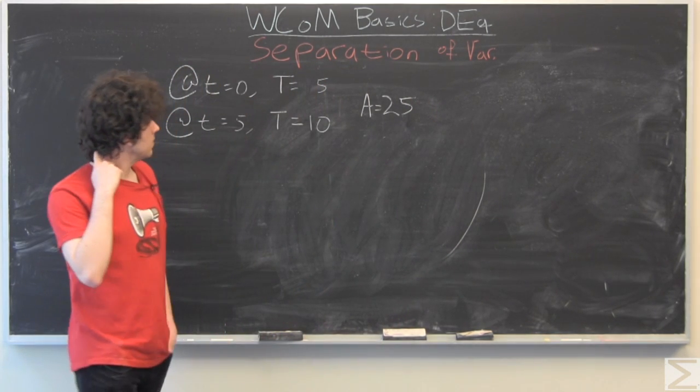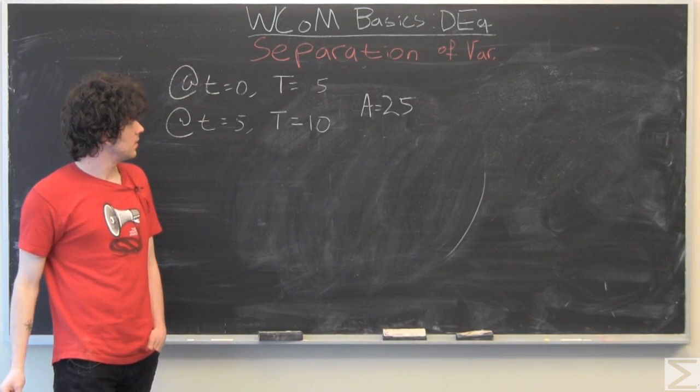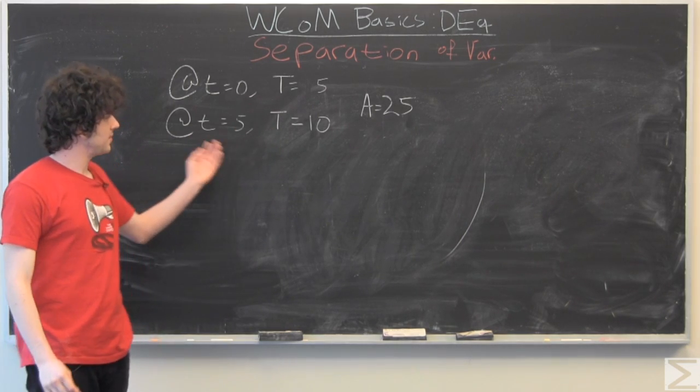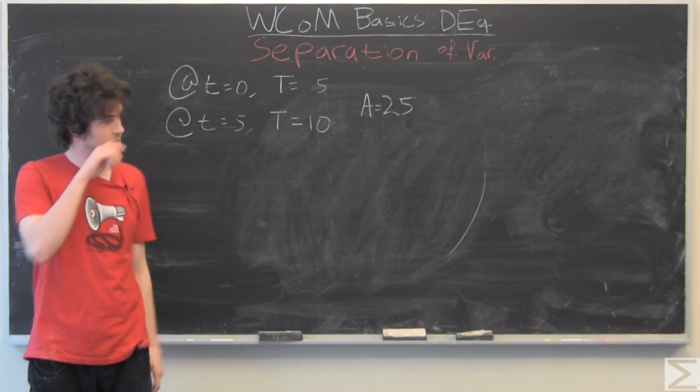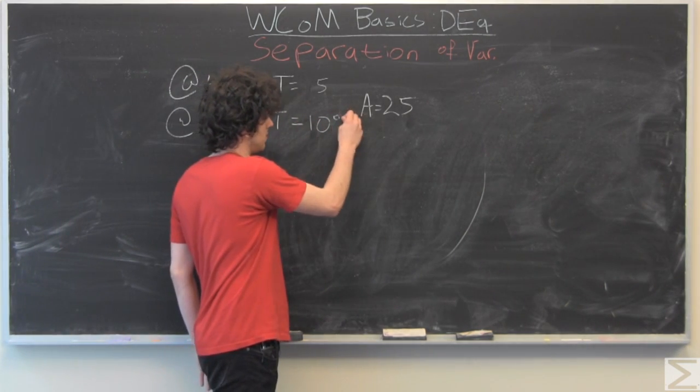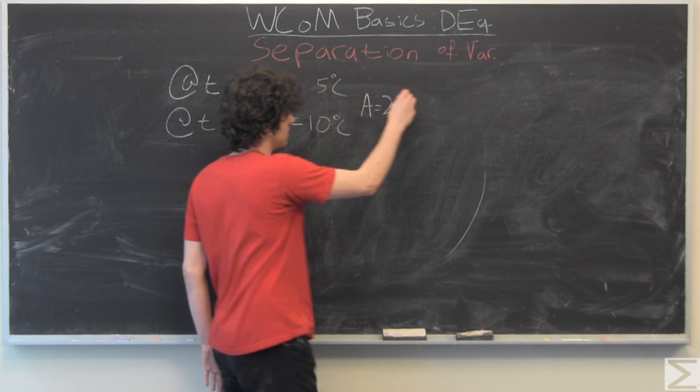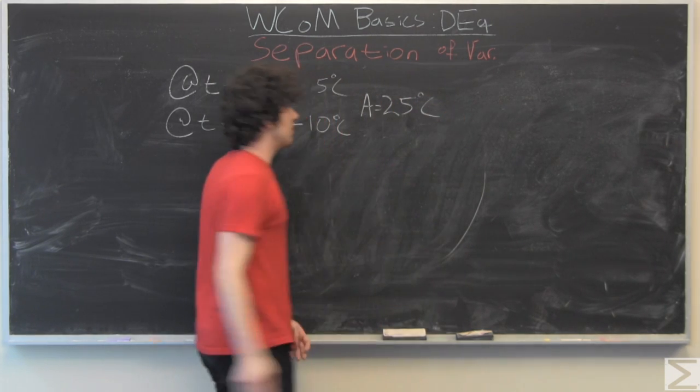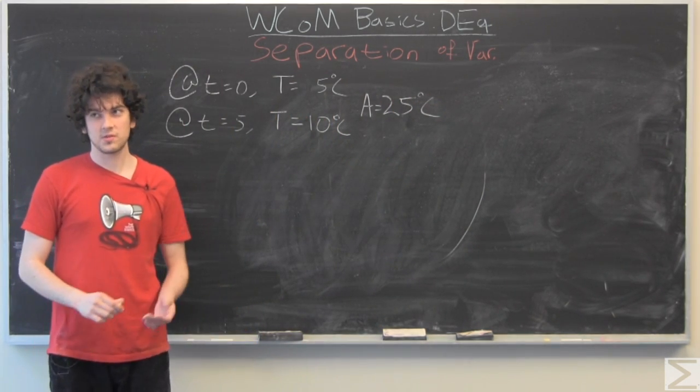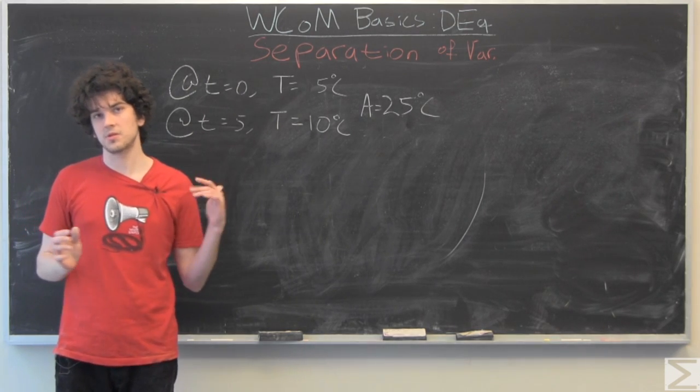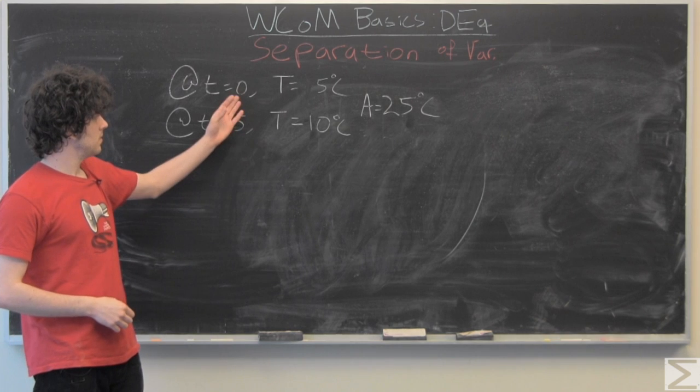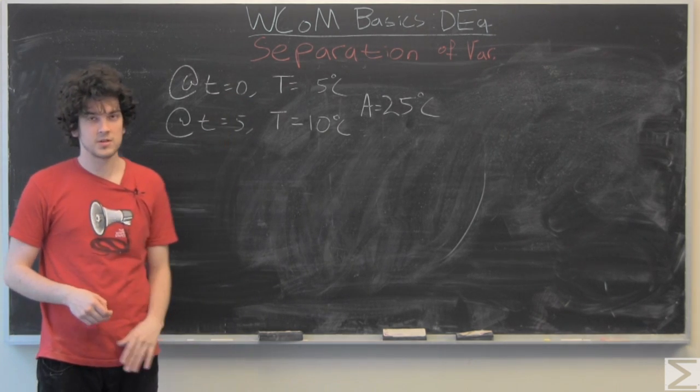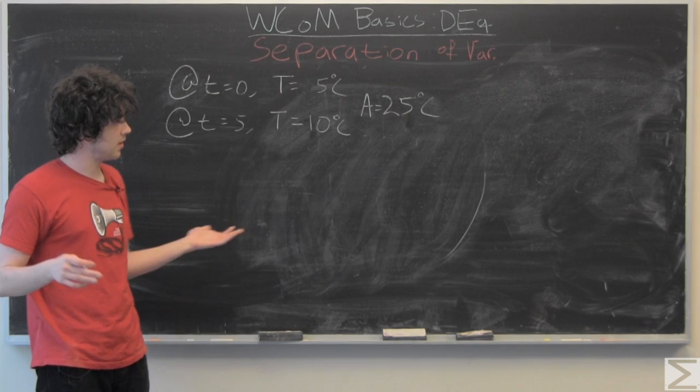So we have our initial condition and we have some other data point and we have our atmospheric temperature. Of course units are always nice but as long as you use the same units throughout you won't have any problems. So we're just going to say we're measuring things in minutes because that's a reasonable scale.